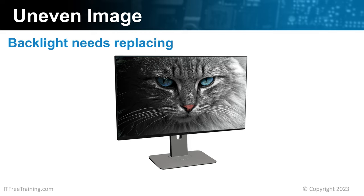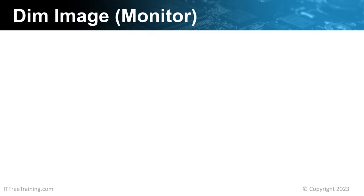You may also get this effect if the backlight is not providing enough light. Generally, part of the screen will look dimmer when compared to other parts. If you have a screen that looks uniformly dim, this will be easier to see if the screen is all the same color — for example, looking at the Windows desktop with a single colored background. When this occurs, it may be the backlight is not giving out enough light. However, there are other problems that can also cause the screen to look dim.